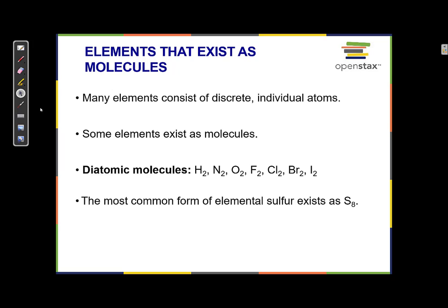Most atoms — most elements — come one at a time. Metals, for example: when I have a sample of sodium, all of the sodium atoms are kind of individual. If I were to write the chemical formula of the metal sodium, I would write Na and indicate that the phase is solid. Or, if I weren't writing the phase, I would just write Na — just to indicate that that element comes all by itself, one at a time.